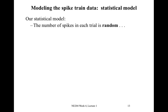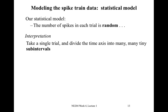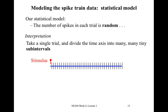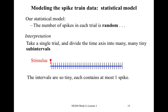Our statistical model says that the number of spikes we see in each trial is random. To interpret this randomness, let's take a single trial and divide up the time axis into many, many tiny sub-intervals. We have our stimulus delivered at the beginning of the trial, and we divide up that time axis into tiny sub-intervals, assuming that each sub-interval contains at most one spike.